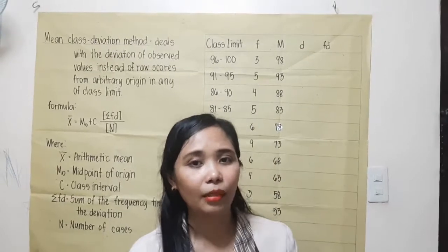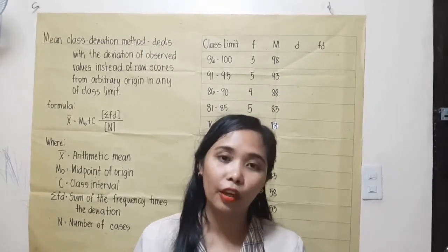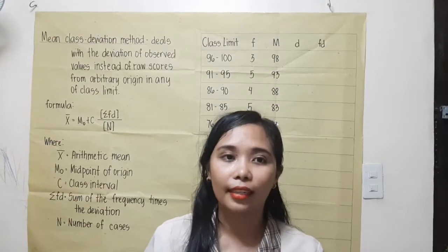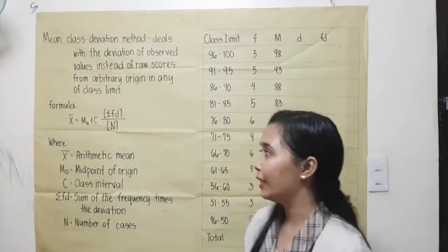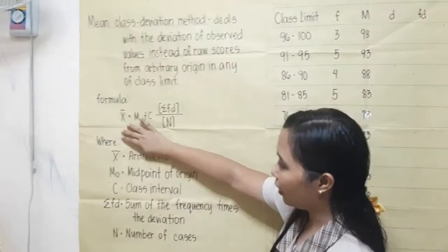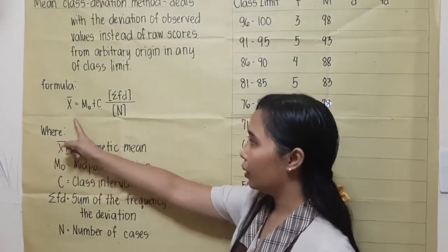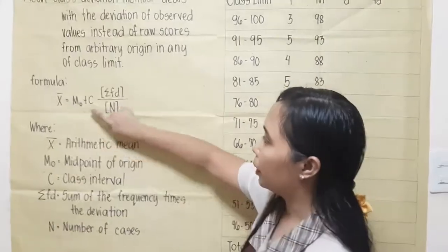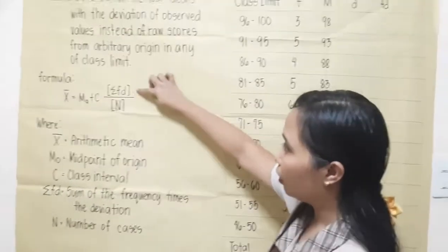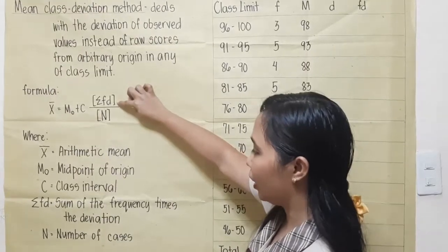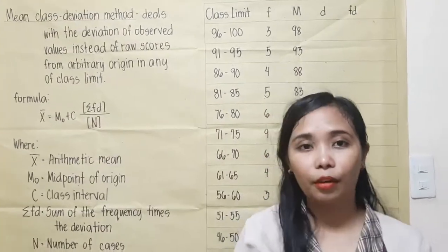If class limits are arranged from lowest to highest, above zero deviation is negative and below it is positive. The formula for the arithmetic mean equals the midpoint origin plus the class interval times the sum of frequency times deviation over the number of cases.